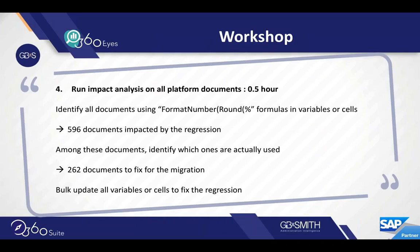They were then able to run impact analysis to determine what other reports in their environment had that issue. They found 596 documents were impacted by that FormatNumber/Round variable. They narrowed it down to only 260 documents that actually needed to be fixed, and then with 360View they were able to do a bulk update on that environment.